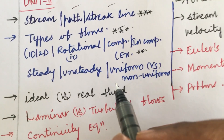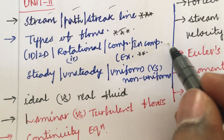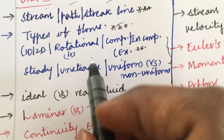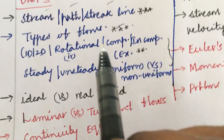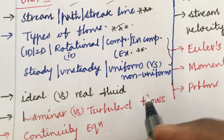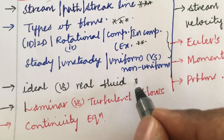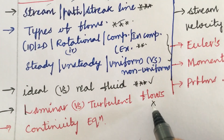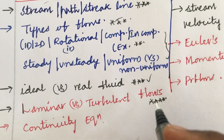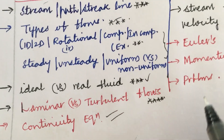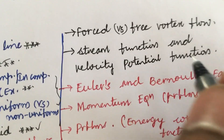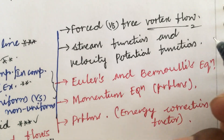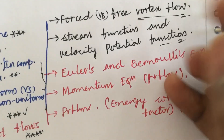Study steady and unsteady flow, uniform and non-uniform flow. If a particular type of flow is given, highlight it; if the question asks to list all types of flows, work out all of them. The difference between real fluid and ideal fluid is also very important in short form. Laminar and turbulent flow problems are much-awaited questions this time. Derive the continuity equation — it is a 5-mark question, expected as a 5+5 split, not a direct 10-mark. Forced versus free vortex flow is a 2-mark question, and stream function and potential function is also a 2-mark question.